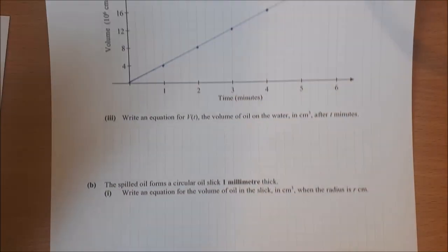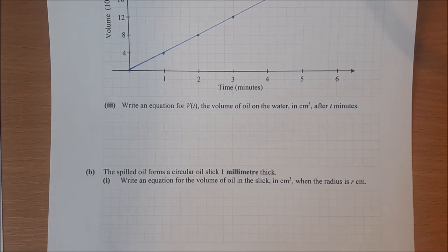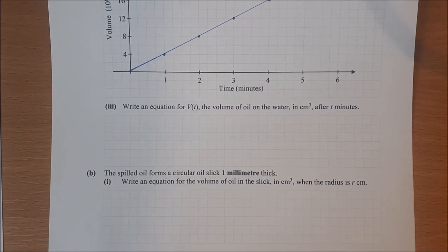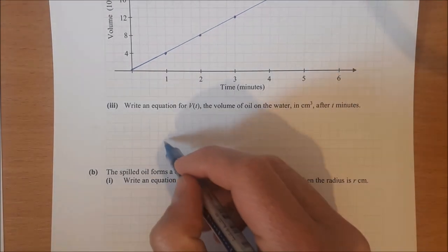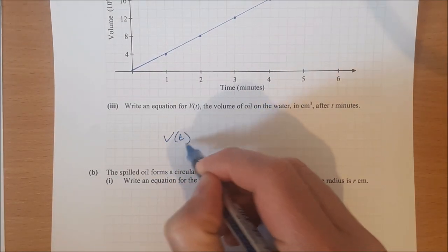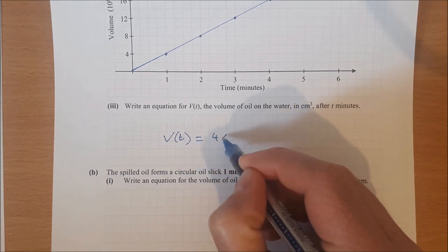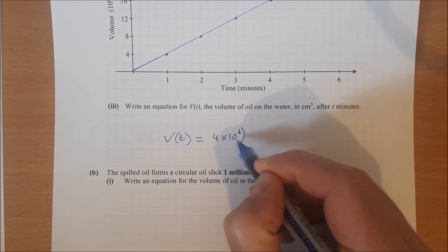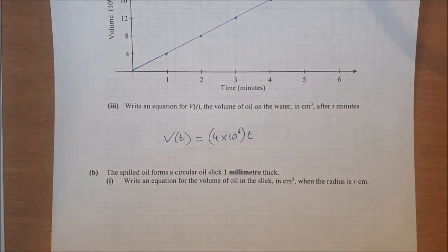Write an equation for V(t), the volume of the oil on the water after t minutes. The volume V(t) is just equal to 4×10⁶ times our time t minutes.